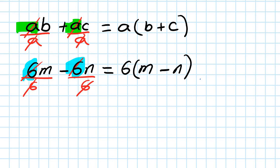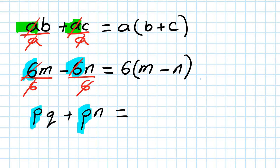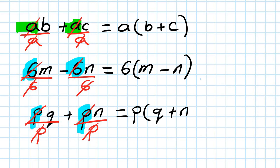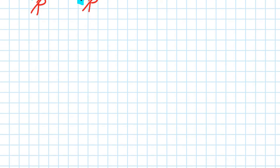Let's do one more of this similar type. Let's say PQ plus P. You can see that the common factor is P. So you take the P out, divide by P — cancel out. You're left with Q plus 1 in the bracket.